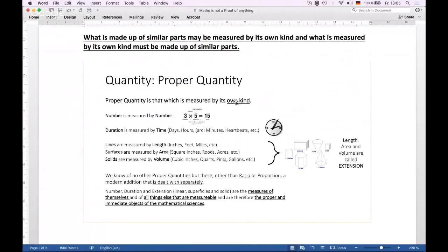So when something is measurable by its own kind, such as number, a number is measured by number. So the number 15, for example, is made up of three times five, both of which are also numbers. Or any duration that we try and measure is measured by time. That can be things like days, hours, minutes, heartbeats, water drips, sands, clocks, you name it. But basically, it's measured by its own kind.